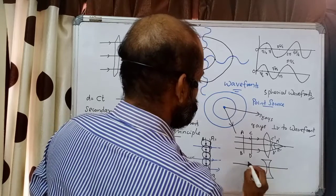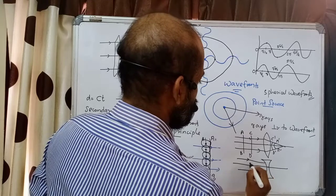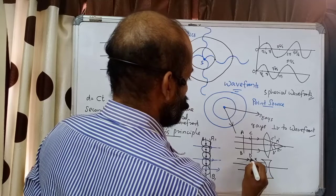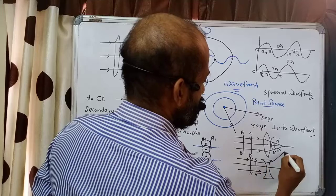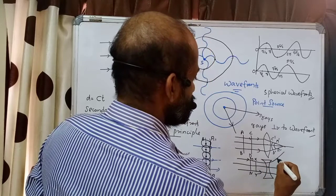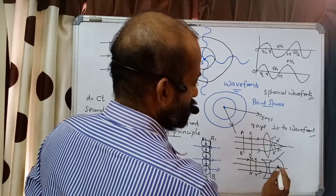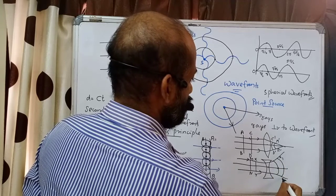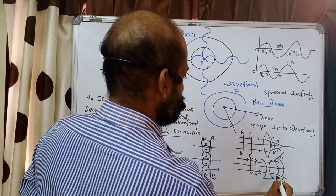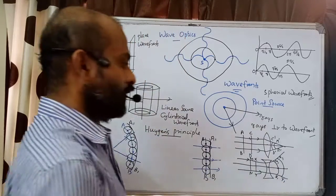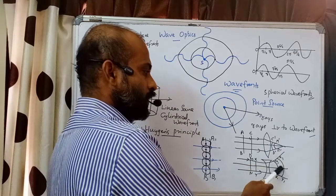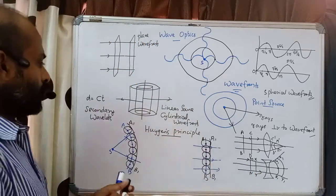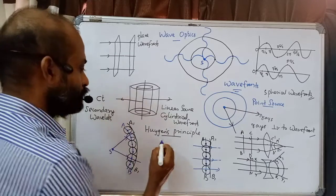Similarly, if you have a concave lens, the light rays pass through it and diverge away. The wavefront also takes a spherical shape but with curvature in the opposite direction. I draw two parallel light rays with wavefronts XY and MN. After passing through the concave lens, the wavefronts become X₁Y₁ and M₁N₁ — both are spherical curved wavefronts, but the curvature is in the opposite direction compared to the convex lens.